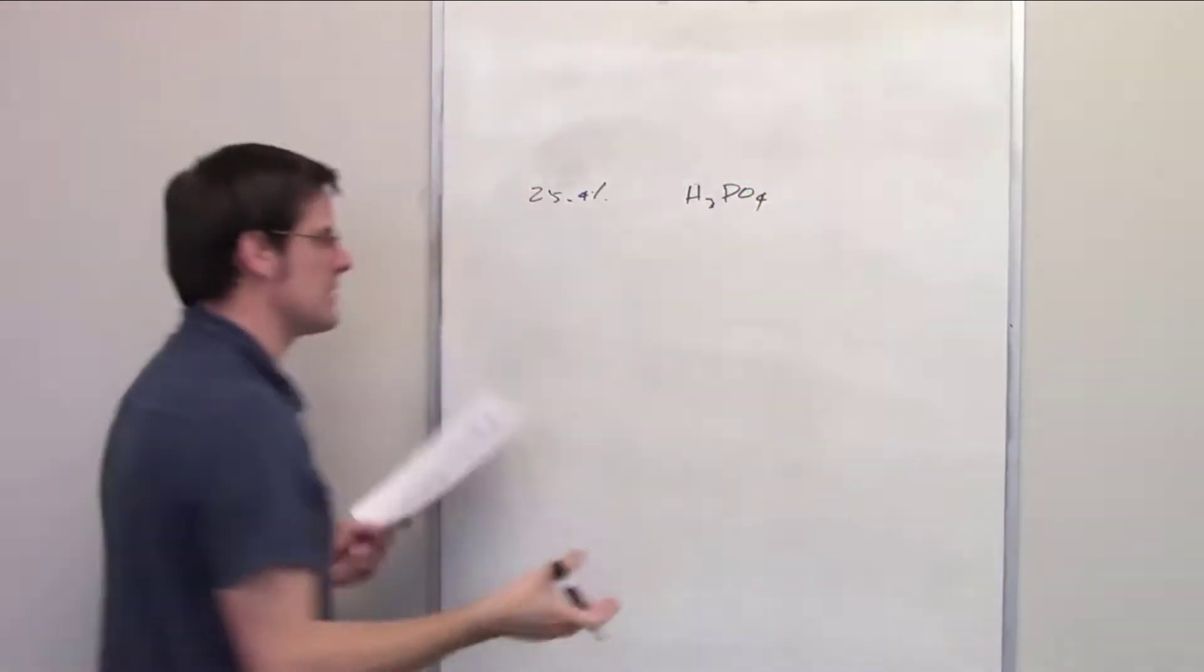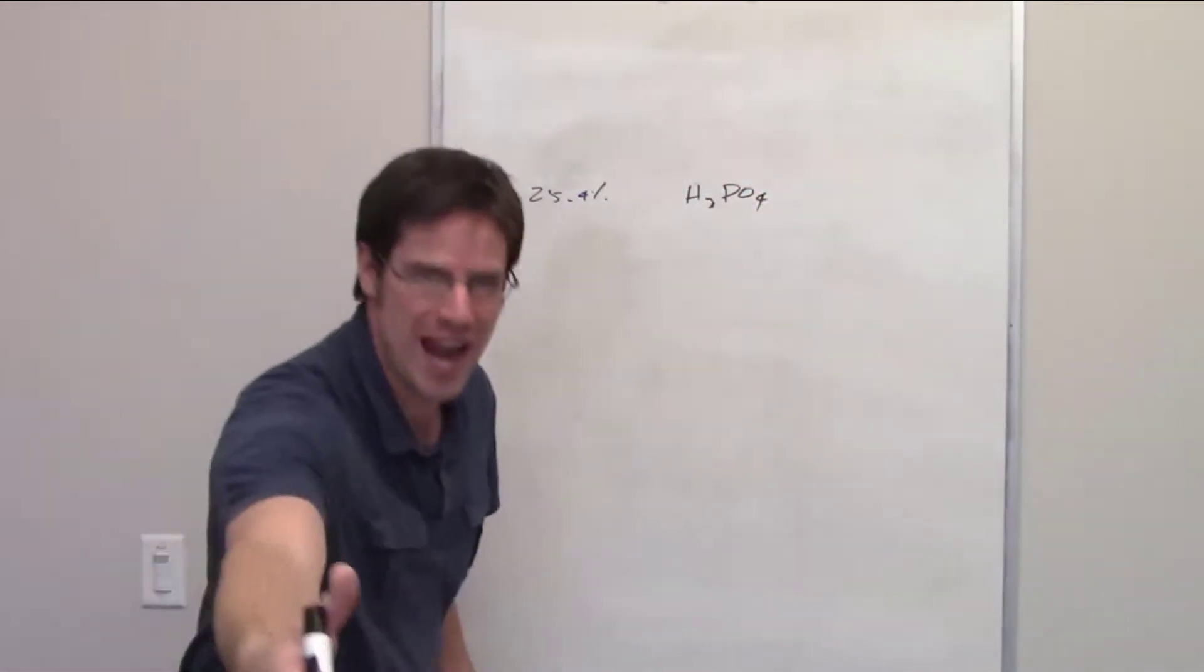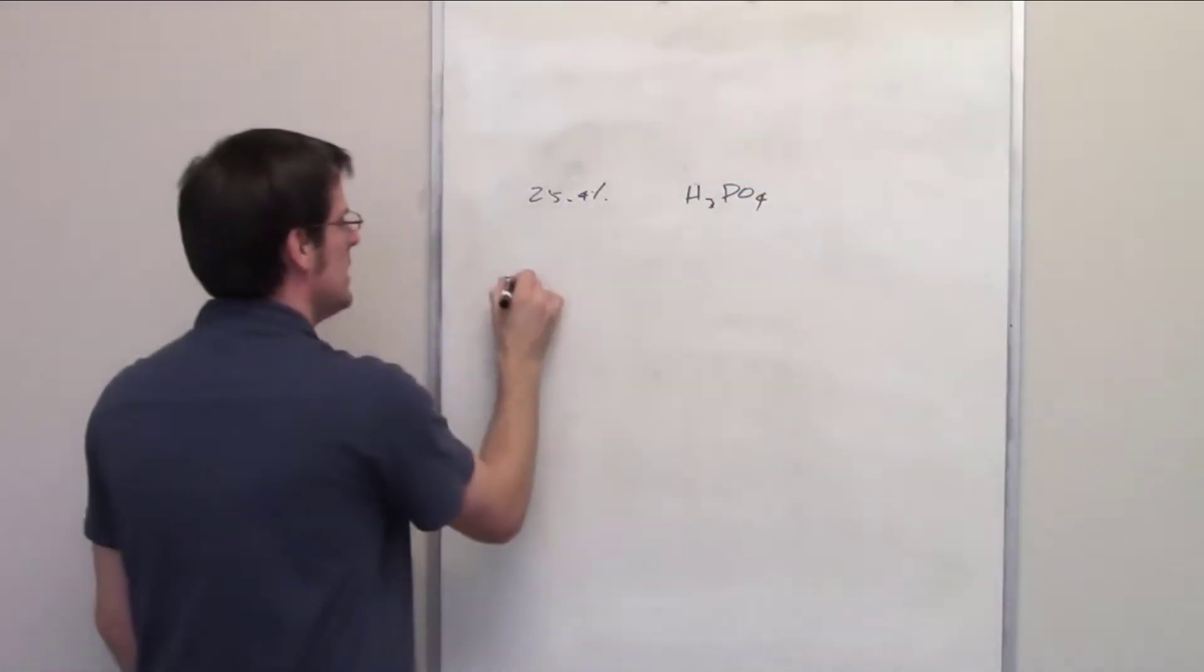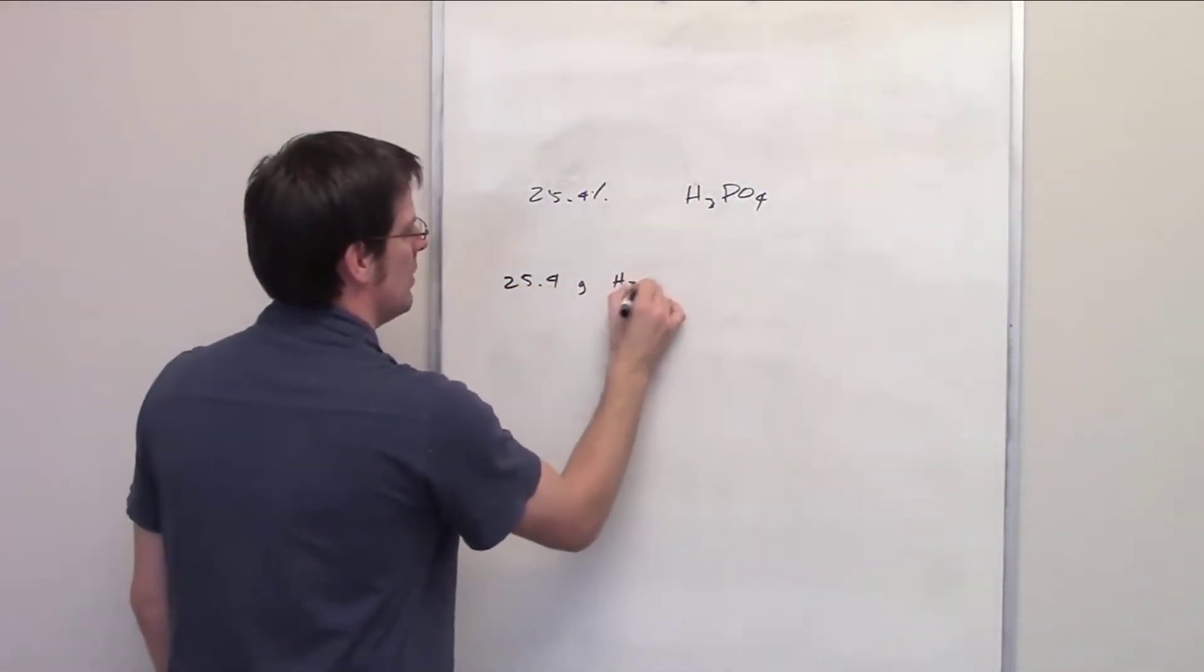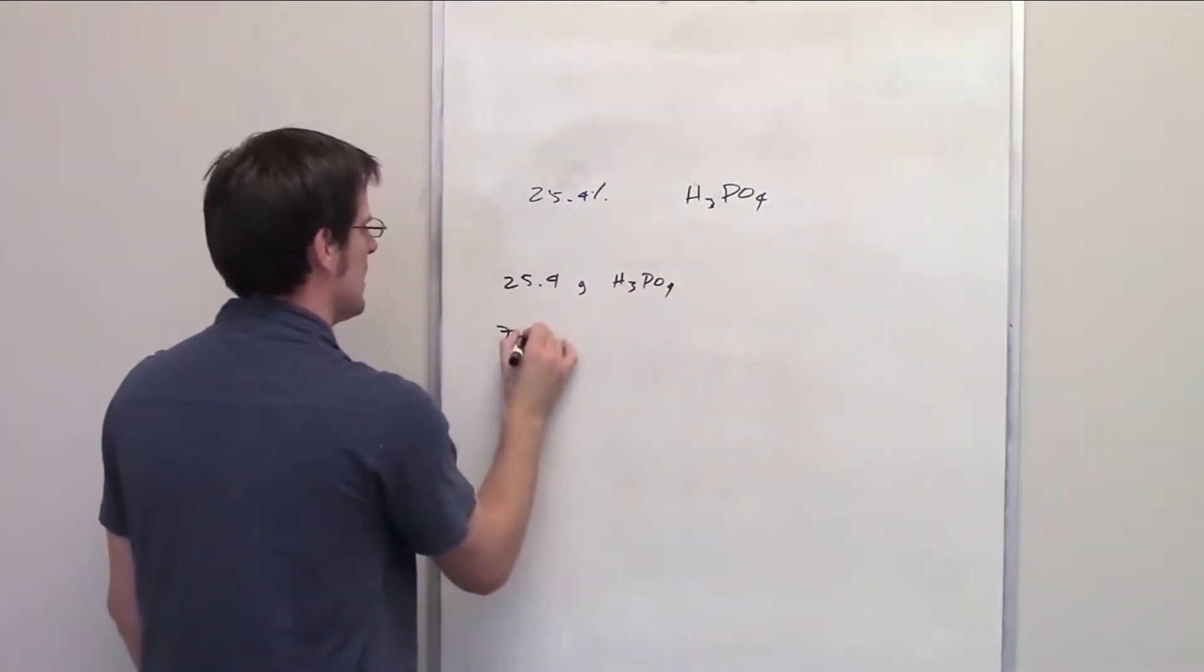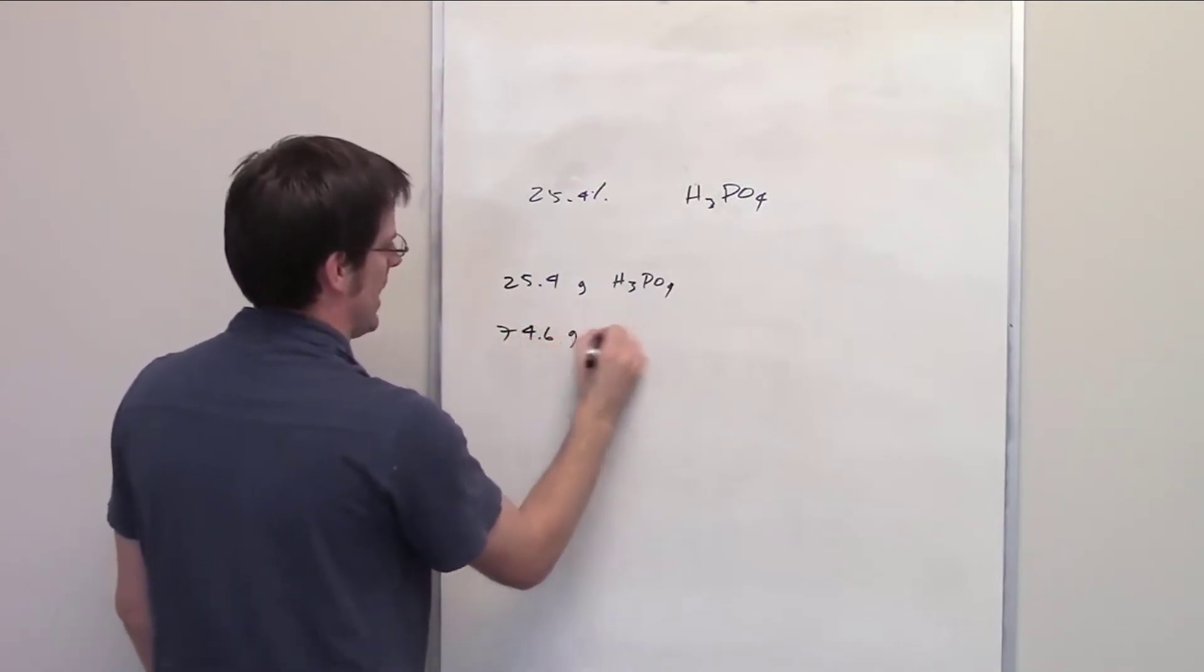As we saw in our previous example, if I had 100 grams of such a solution, it would be 25.4 grams of phosphoric acid and 74.6 grams water.